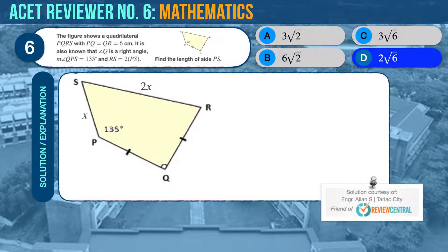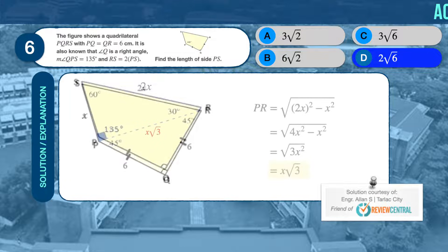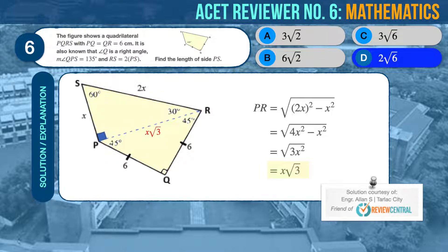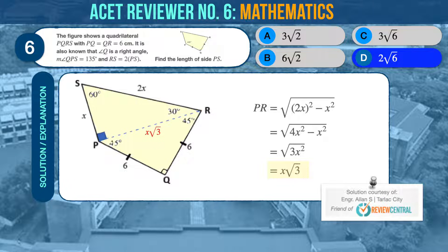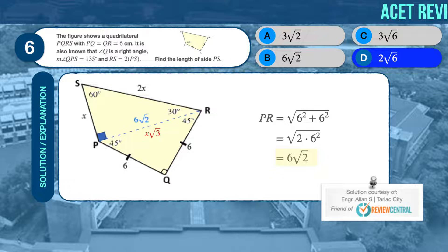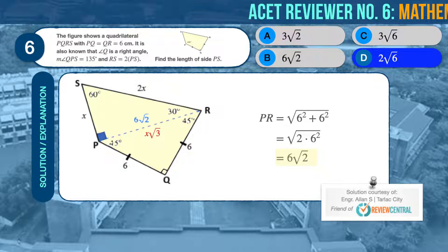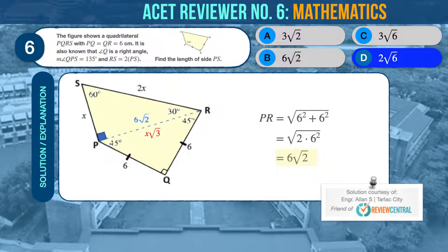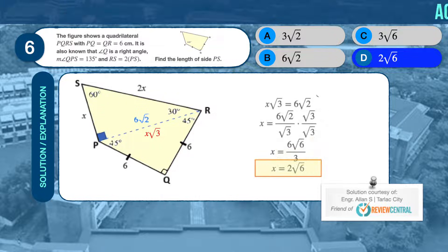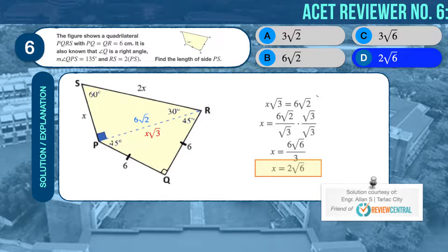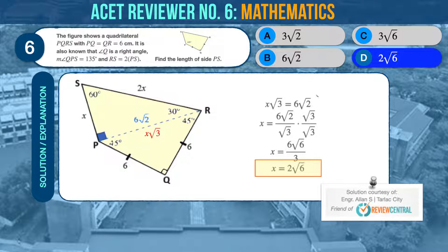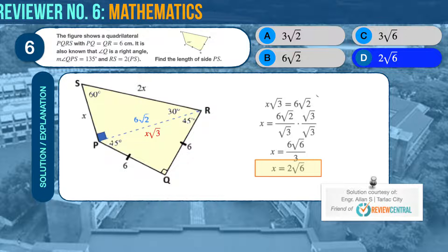Let X be the length of side PS. Since RS is equal to twice PS, then RS is 2X. The imaginary triangle SPR must be a 30-60-90 right triangle, since the hypotenuse SR is twice the length of one of the legs SP. Using the Pythagorean formula, we can compute for the length of side PR to be X times the square root of 3. Moving on to the lower side of quadrilateral PQRS, since angle Q is known to be a right angle, and sides PQ and QR have equal lengths, then the imaginary triangle PQR must be a 45-45-90 isosceles right triangle. Using the Pythagorean formula, we can compute the length of side PR to be 6 times the square root of 2. From the resulting figure, we can see that side PR now has two known values, X times the square root of 3, and 6 times the square root of 2. Therefore, X times the square root of 3 is equal to 6 times the square root of 2. Solving for X, we should arrive at 2 times the square root of 6. Therefore, the correct answer is D.